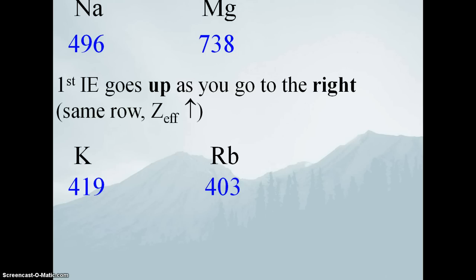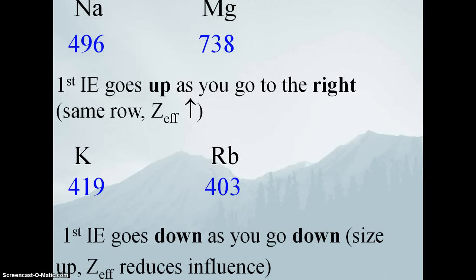Looking top to bottom: potassium and rubidium are both in group 1A, and we see that potassium has a larger first ionization energy than rubidium. This makes sense because rubidium is a larger atom, meaning its outermost electrons are farther out. If they're farther out, it's easier to remove them. There's a deep correlation between atomic radius and how tightly those outermost electrons are being held — the looser they're held, the easier they are to remove. So the first ionization energy goes down as you go down the periodic table, as size goes up and effective nuclear charge reduces that influence.